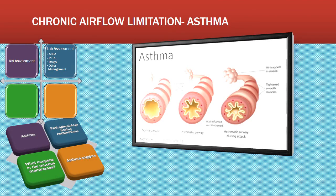Chronic airway limitation is a group of lung diseases that include asthma, chronic bronchitis, and pulmonary emphysema. When we talk about chronic bronchitis and pulmonary emphysema, we're talking about COPD, which presents with bronchospasms and dyspnea, irreversible tissue damage, and gets worse over time, leading to respiratory failure.